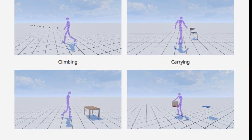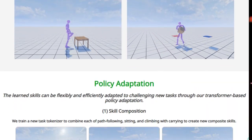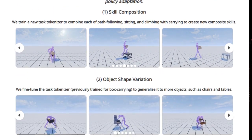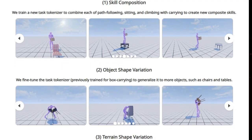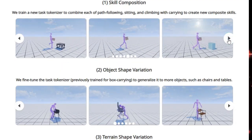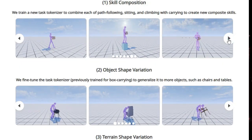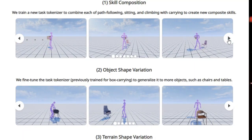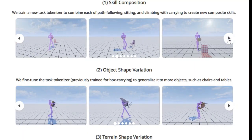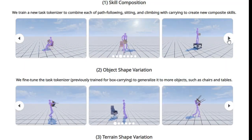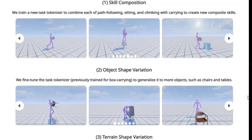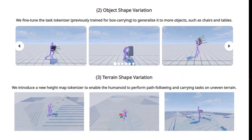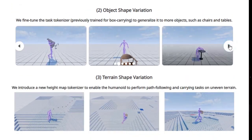The key to this unification lies in its clever use of task tokenization. Imagine breaking down each interaction into specific tokens that the AI can understand and combine. What's really innovative is how Token HSI treats the humanoid character's own body information — its proprioception — as a shared token, separate from the task-specific tokens. This allows for effective knowledge sharing across different skills, making it easier for the model to learn and perform multiple tasks. Token HSI's architecture is designed for flexible adaptation to new and challenging scenarios, and by training additional task tokenizers, the model can learn to compose existing skills to create entirely new interactions.